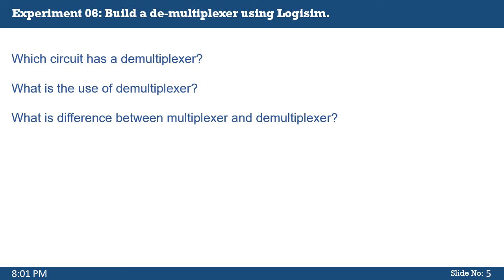The third question is: what is the difference between a multiplexer and a demultiplexer? A multiplexer is a combinational circuit that accepts multiple data inputs but provides a single output. A demultiplexer is a combinational circuit that takes a single input but can direct that input through multiple outputs — it has one input and multiple outputs.